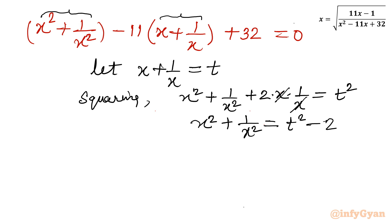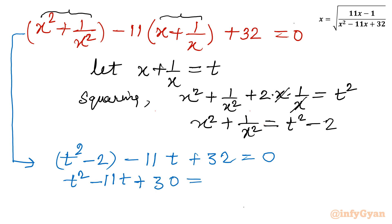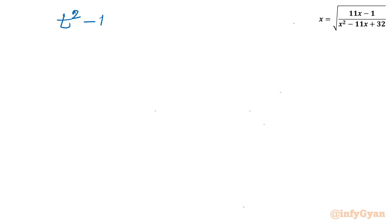Substituting into the equation, the first bracket becomes t squared minus 2, giving us: t squared minus 2 minus 11t plus 32 equals 0, which simplifies to t squared minus 11t plus 30 equals 0. Our substitution is x plus 1 over x equals t.